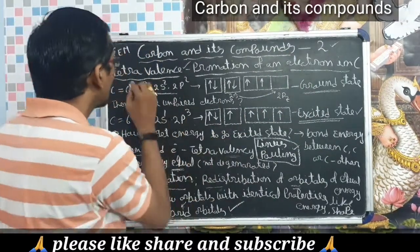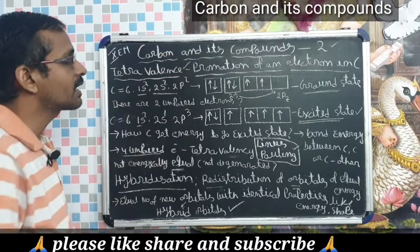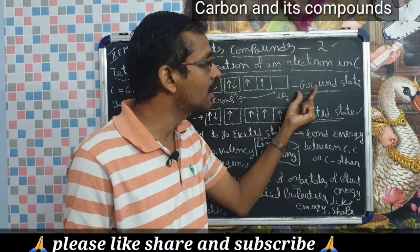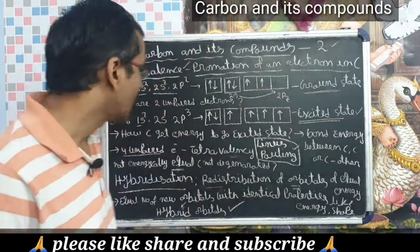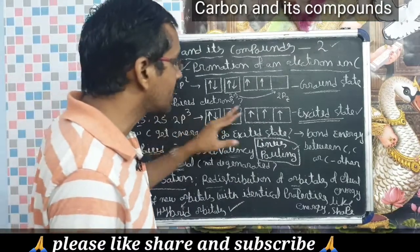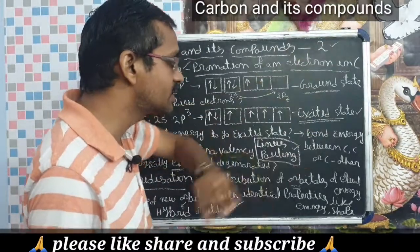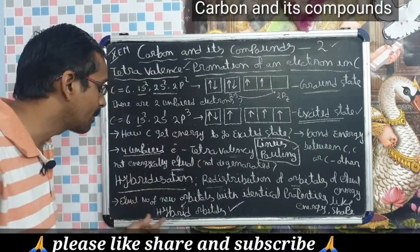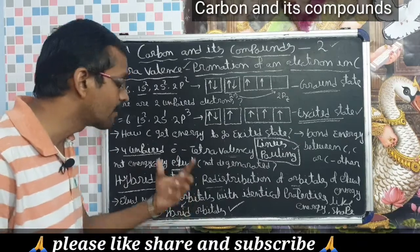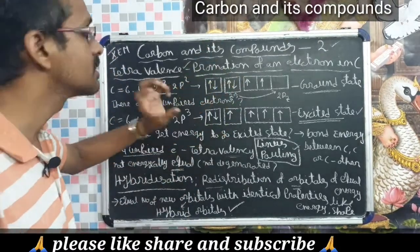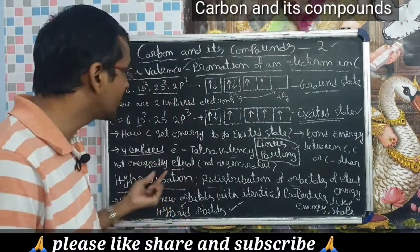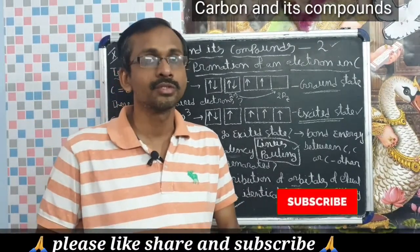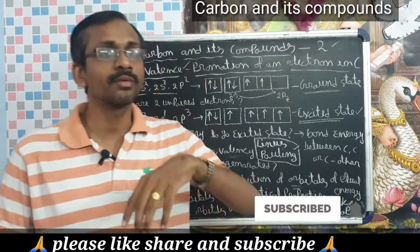In this class, we learned about the tetravalency of carbon and how carbon satisfies tetravalency, how carbon goes from ground state to excited state, how carbon gets the energy to reach the excited state, how the unpaired electrons are transformed into hybrid orbitals, and what hybridization and hybrid orbitals are. In the next class, we will look at hybridization in more detail with examples.